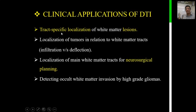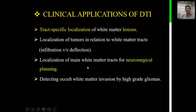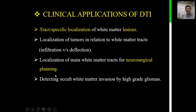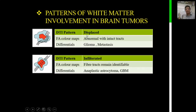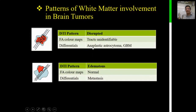The practical clinical applications of DTI include tract-specific localization of white matter lesions, localization of tumors relative to white matter tracts, differentiating infiltration from displacement — an important distinction in tumors — localization of major white matter tracts for neurosurgical planning, and detection of occult white matter invasion by high-grade gliomas. In low-grade gliomas and metastasis, tracts are displaced; in anaplastic astrocytoma and GBMs, tracts are infiltrated but remain identifiable; in very high-grade gliomas, tracts are completely disrupted; while in metastasis and edema, tracts are displaced but otherwise normal.